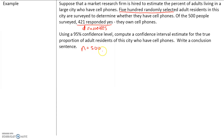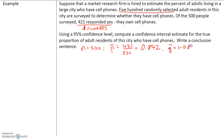Our p-hat would be 421, the number of successes, divided by the total sample size — 421 divided by 500 — which is going to be 0.842. So if p-hat is 0.842, then q-hat is 1 minus 0.842, which is 0.158.